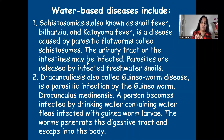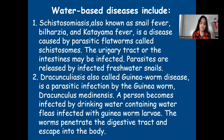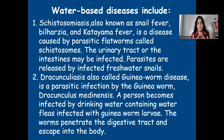Schistosomiasis is caused by parasitic flatworms called schistosomes, which may affect the urinary tract or intestines. These parasites are released by infected freshwater snails. When snails release these parasites in their stools and we come in contact with that dirty water, we get schistosomiasis, where flatworms infect our urinary tract.